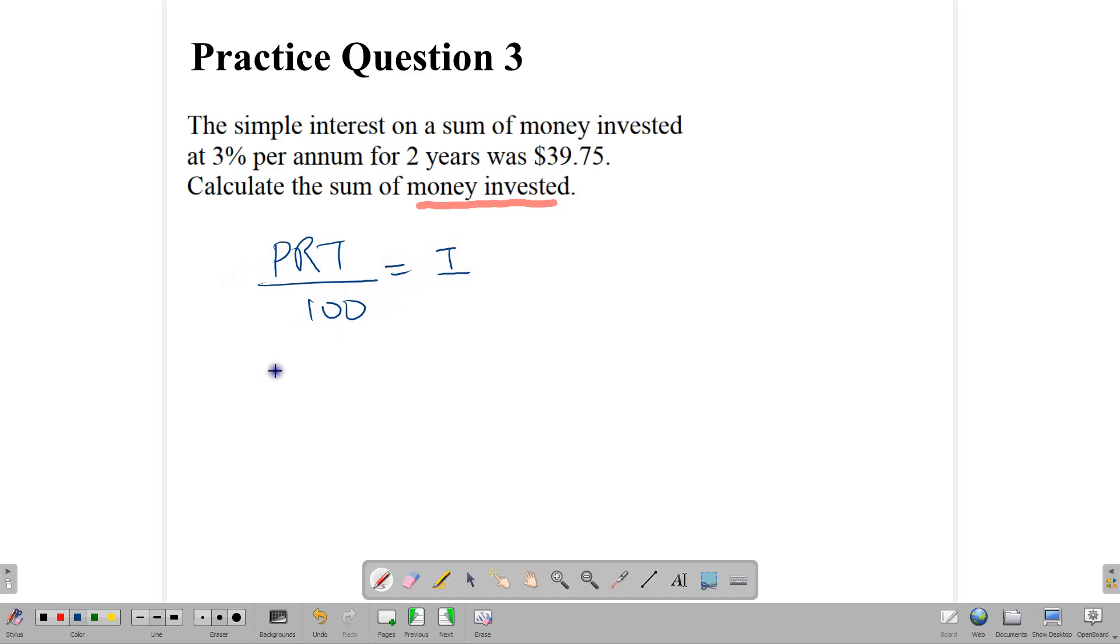Now, what do we know from this formula? We know the rate. We do not know the principal. So let's leave principal there. Rate, we know. That's 3%. And time, we know. That's two years. So PRT over 100. And we know that when this calculation is run, what we get is $39.75. So here, we can do a quick cross multiplication. So we have here that 6P, 3, 2, 6. 6P is equal to 100 times this, which gives us $39.75. And so to find our principal, what we need to do is to say principal is equal to $39.75 divided by 6. And that will give us $662.50.